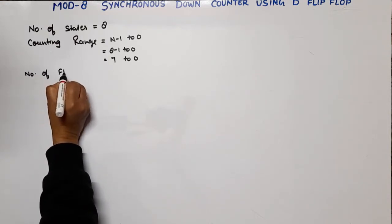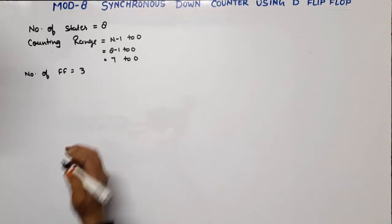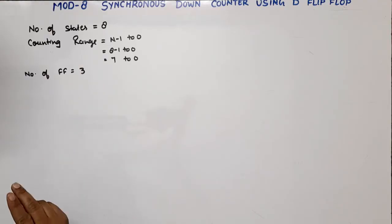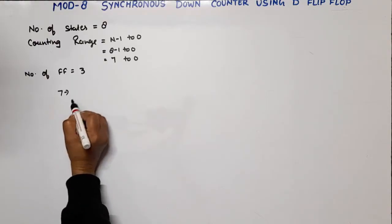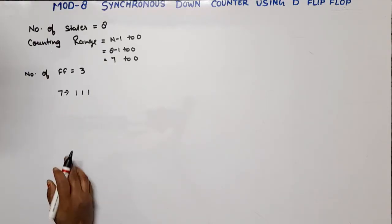Now how many flip-flops are required? Number of flip-flops is equal to 3. There are two methods to find the number of flip-flops. First of all, the highest value is 7. Convert this to binary: 1-1-1. How many bits are there? Three bits means three flip-flops are required.